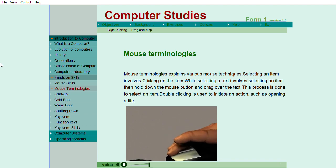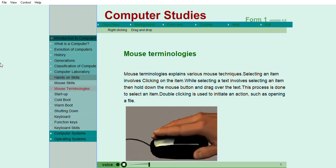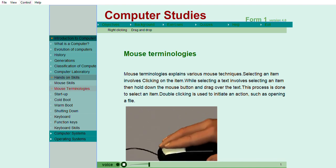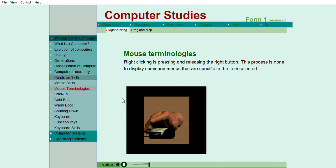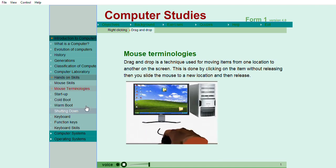Clicking is pressing and quickly releasing the buttons, that is the right and the left buttons. This process is done to select an item from an option. Double clicking is pressing the left button twice in a rapid succession. Double clicking is used to initiate an action, such as opening a file. Right clicking is pressing and releasing the right button. This process is done to display command menus that are specific to the item selected. Drag and drop is a technique used for moving items from one location to another on the screen. This is done by clicking on the item without releasing, then you slide the mouse to a new location and then release.